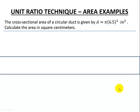Here's our unit ratio technique lesson with area examples. For this example, we have the cross-sectional area of a circular duct, and we're told that it's given by the formula area equals pi times 6.5 squared, and our units are measured in inches, so we have inches squared. This is the classic area of a circle, area is pi r squared, where our 6.5 is our radius. But we want our area in square centimeters.